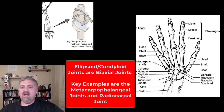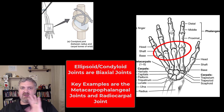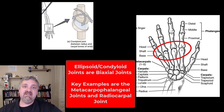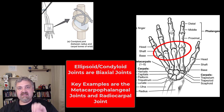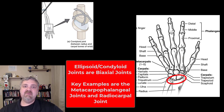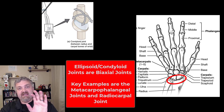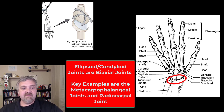Next we have the ellipsoid or condyloid joints. The book calls them ellipsoid, but I prefer the term condyloid joints. These are biaxial joints. The best example is the metacarpophalangeal joints — the knuckle joints between the metacarpals and proximal phalanges (the thumb is separate; it's a saddle joint). Because of the condyloid or ellipsoid shape, they are biaxial: I can flex and extend my fingers, but also move them in a second direction. Another good example is the radiocarpal joint between the radius and the wrist, where I can flex, extend, and move the wrist side to side.